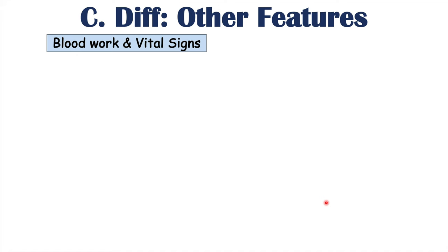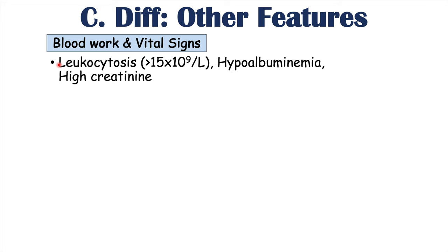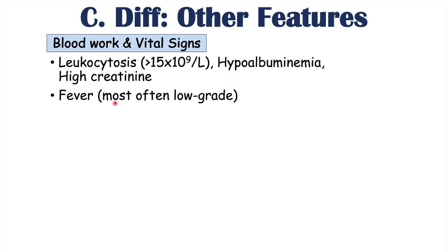Abnormal blood work in a C. difficile infection can include leukocytosis — a high white blood cell count greater than 15 × 10⁹ cells per liter — which is noted in more severe infections. Hypoalbuminemia, or low albumin, can occur due to protein-losing enteropathy, where patients excrete albumin from their gastrointestinal tract in more severe cases. High creatinine levels can also occur. Fever can be present but is usually low grade; a higher fever is more indicative of a severe presentation.